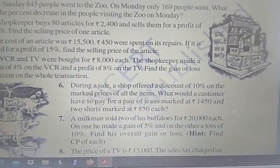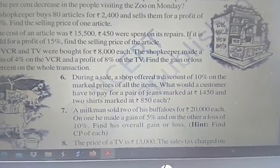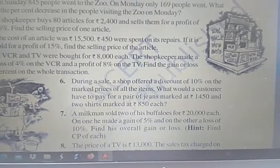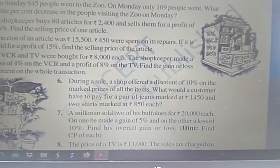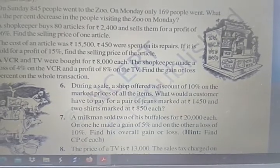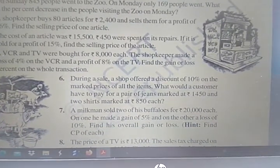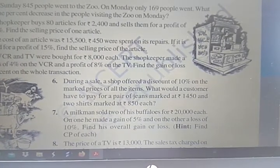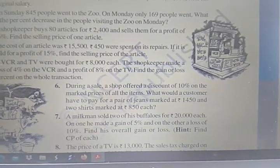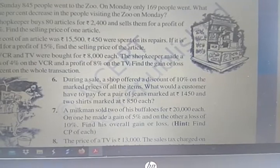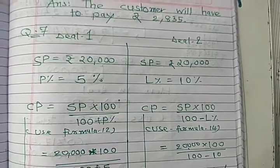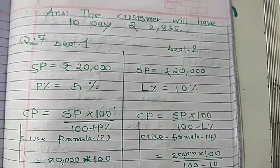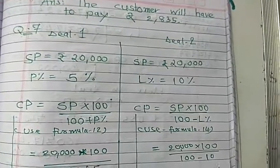Students move to question number 7. A milkman sold two of his buffalo for each 20,000 price. On one he made a gain of 5% and other buffalo he lost 10%. So find overall his gain or loss.